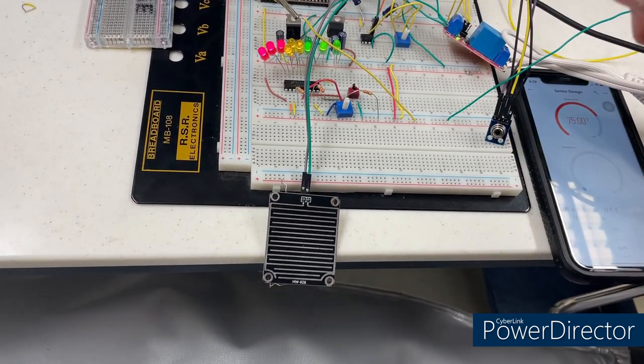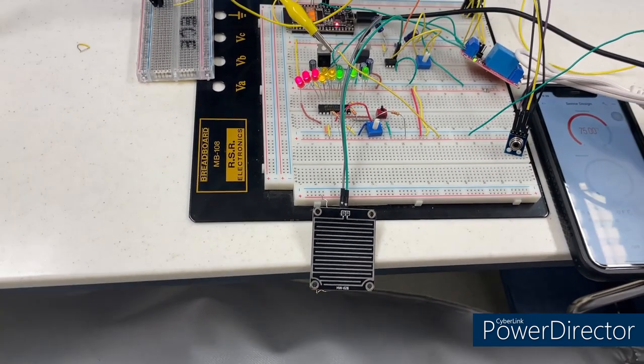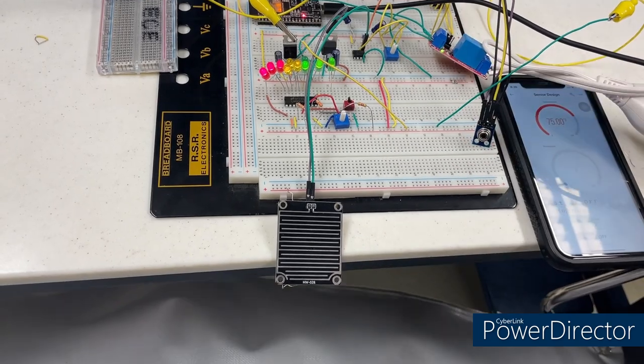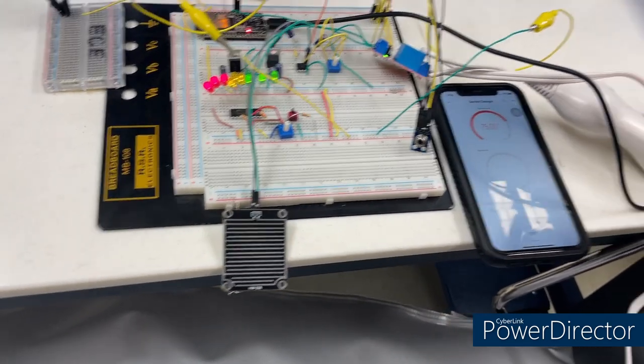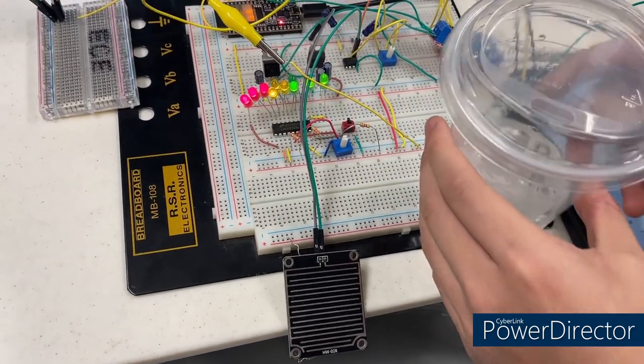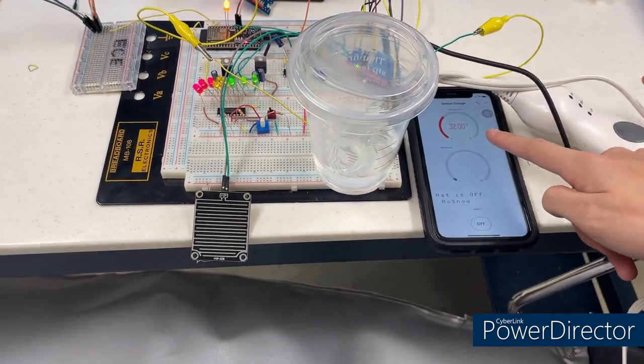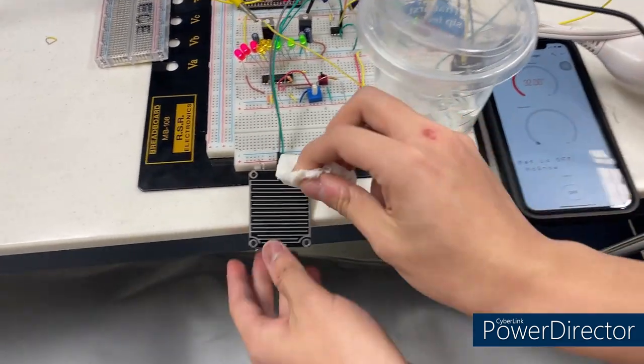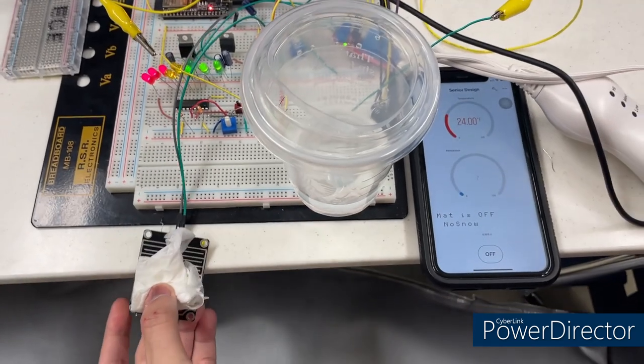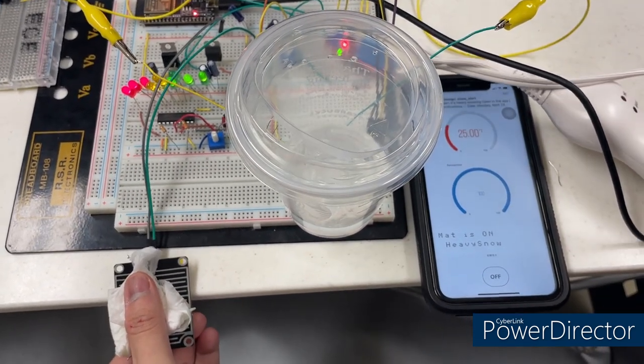The STM32 will send a signal to the relay module, which will control the current of the heating mat to turn it on or off. Now we're going to demonstrate. First, lower the temperature to under 50 degrees Fahrenheit. You can see the light on the relay module is on.